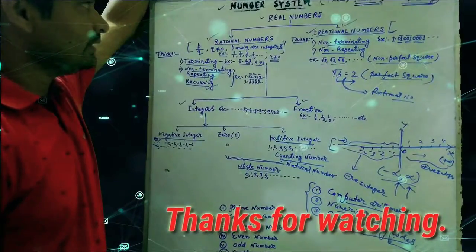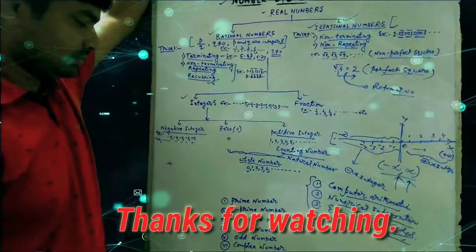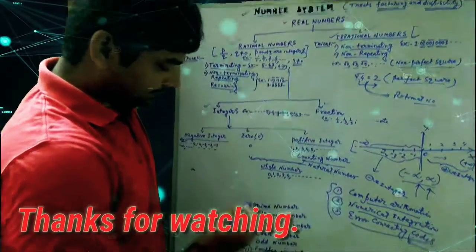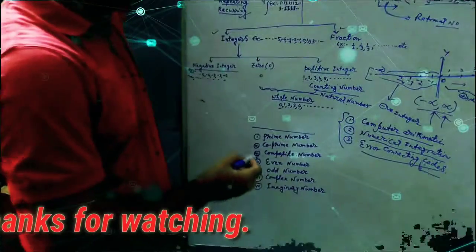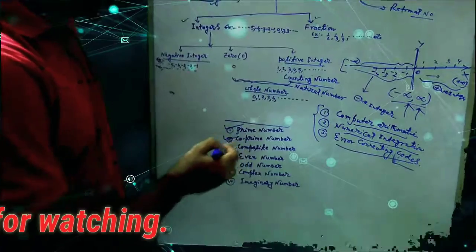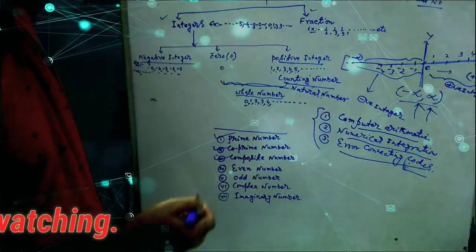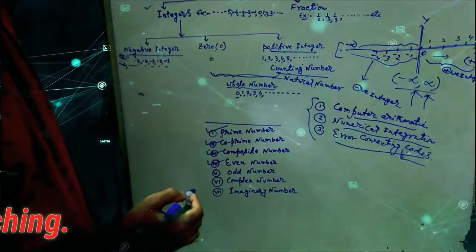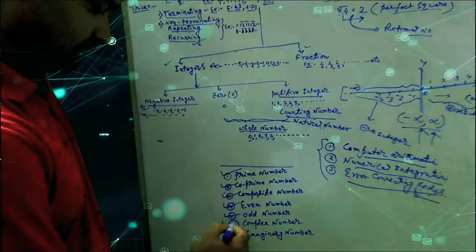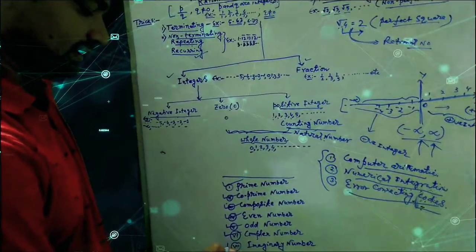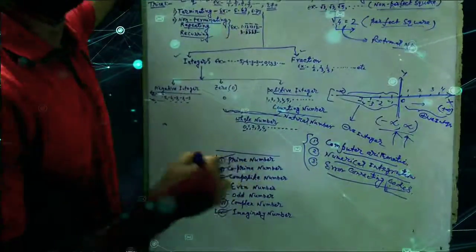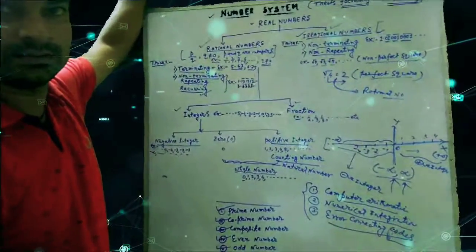In the next video, we will introduce and define various types of numbers: number one, prime numbers; number two, co-prime numbers; number three, composite numbers; number four, even numbers; number five, odd numbers; number six, complex numbers; number seven, imaginary numbers. These numbers will be studied in the next video. Thank you.